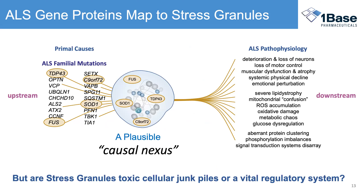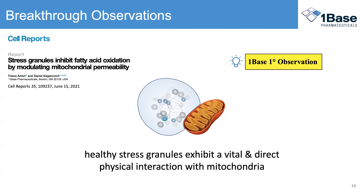I'm going to move on to quickly review some of the data from the Kaganovich lab, starting with the observation that many of these causative mutations map in one way or another to stress granules. Stress granules have a spectrum of opinions in terms of what they are. Many of these proteins are implicated as poisoning stress granules or infecting them. At the other end of the spectrum, they just finish up in this toxic waste dump. This spectrum of opinions has stress granules being at one end a toxic cellular junk pile, at the other end a vital regulatory system. This is in the absence of a true understanding of what stress granules do, and that introduces the work of Dan Kaganovich's lab.